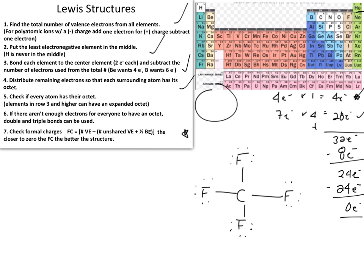Looking at a fluorine atom: it has two, four, six unbonded electrons plus two from the bond, giving a total of eight electrons. Each fluorine is fully satisfied. All atoms have met their octet requirements.